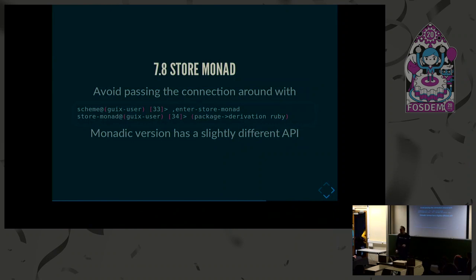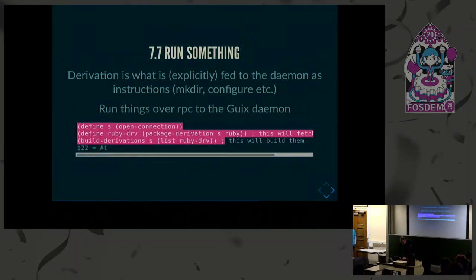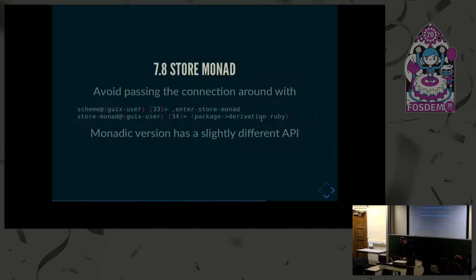There's a concept called the store monad. When people talk about monads they usually think about Haskell and functional programming languages, but you can also do this in Lisp. Specific monadic functions avoid you having to reference the daemon, the store, or the connection every time. Rather than explicitly saying 'build-derivations S and then something', here you can just say 'package-derivation ruby' - the monad carries the definition of the store with it, so you don't have to reference it again. This is another way of simplifying the code, because otherwise you'd have many references to the daemon which is actually not necessary.